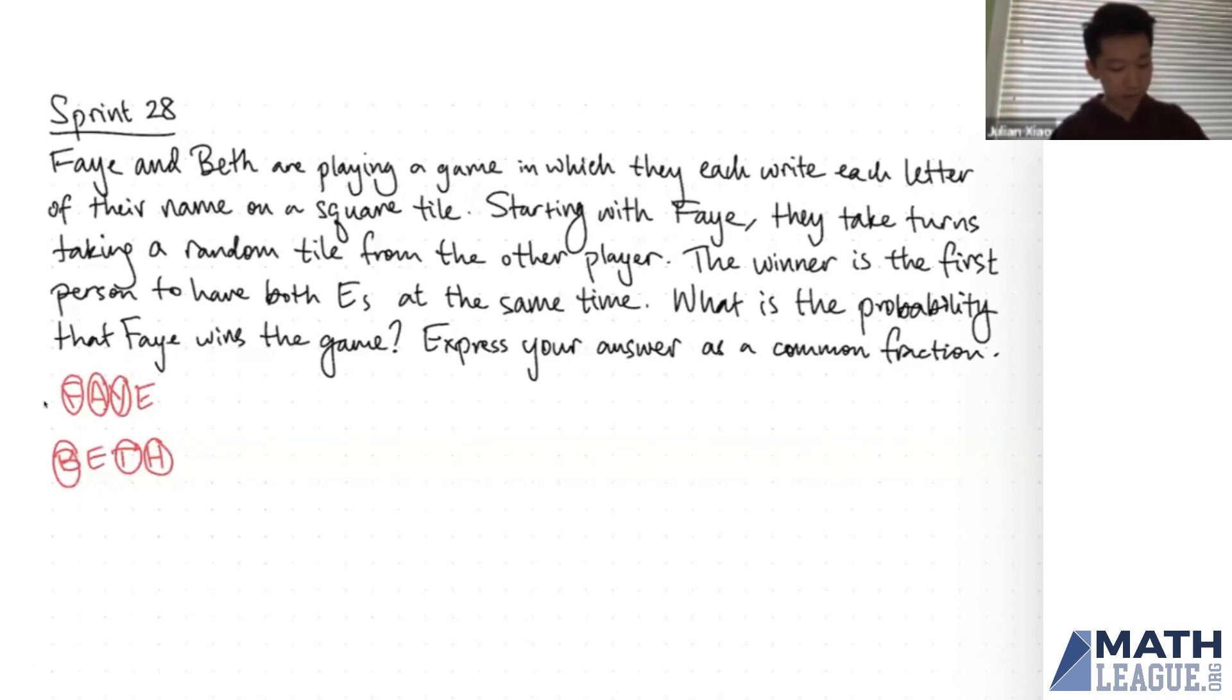So what I can do is instead, I can just forget these letters and I can just replace all of the letters that are not E with just an arbitrary placeholder. So I'm just going to make them X. So now each player starts with three X's and one E.